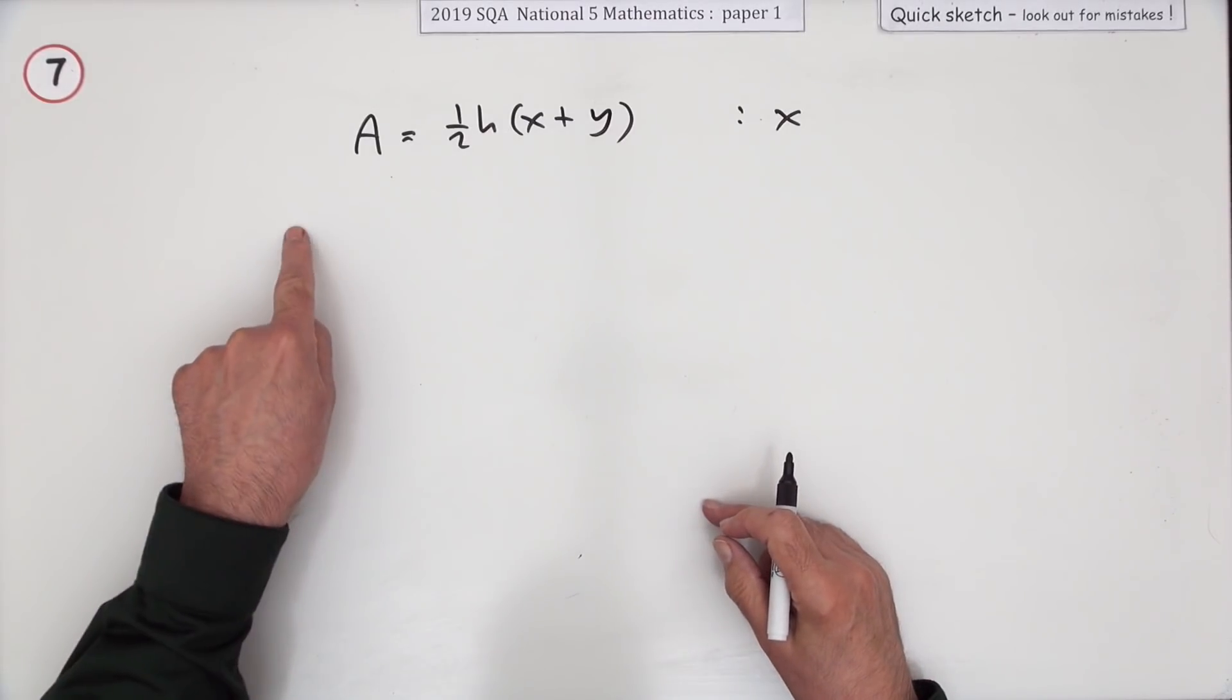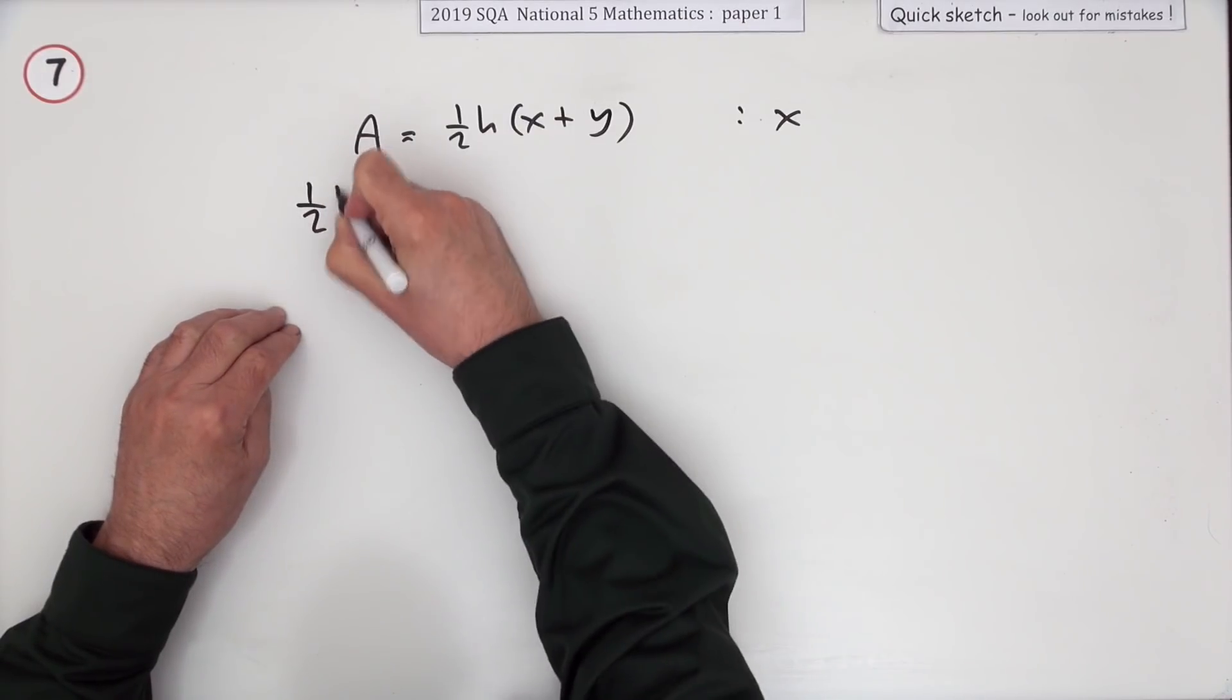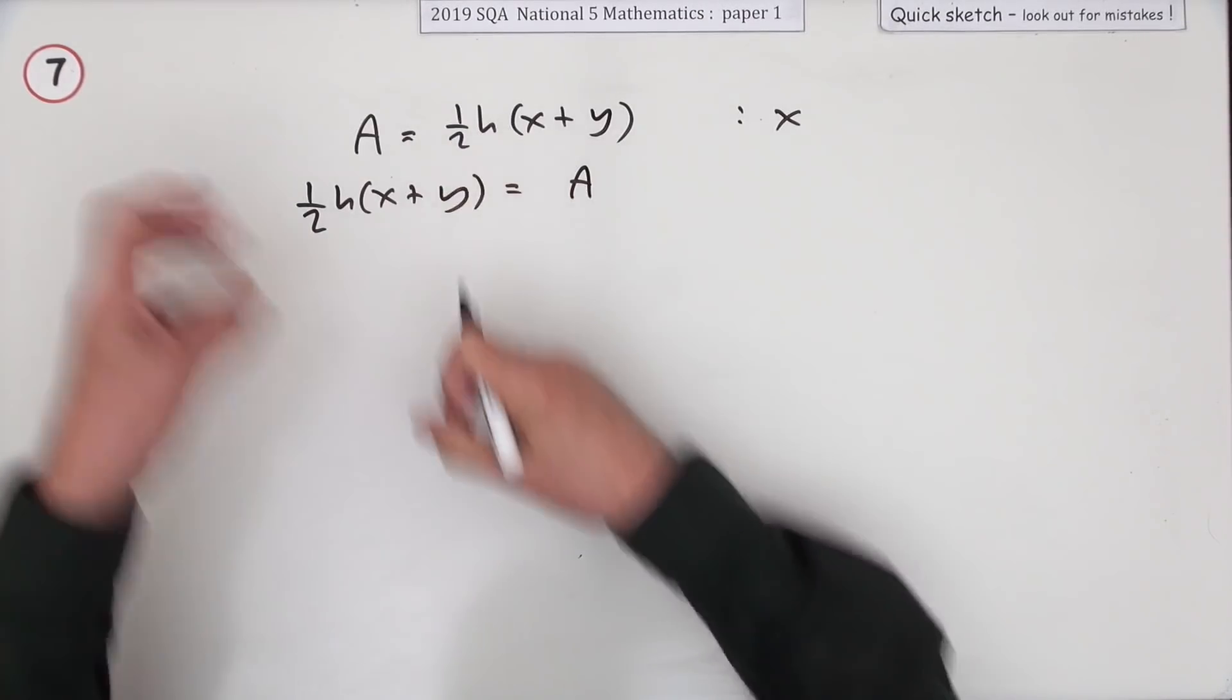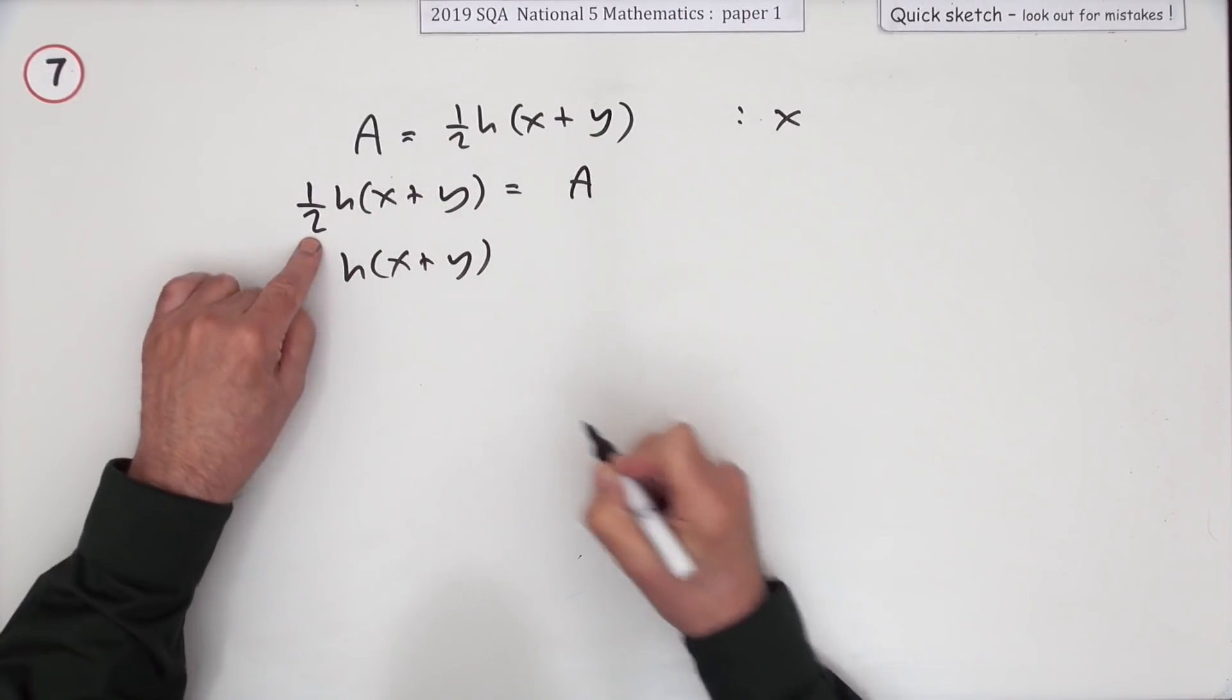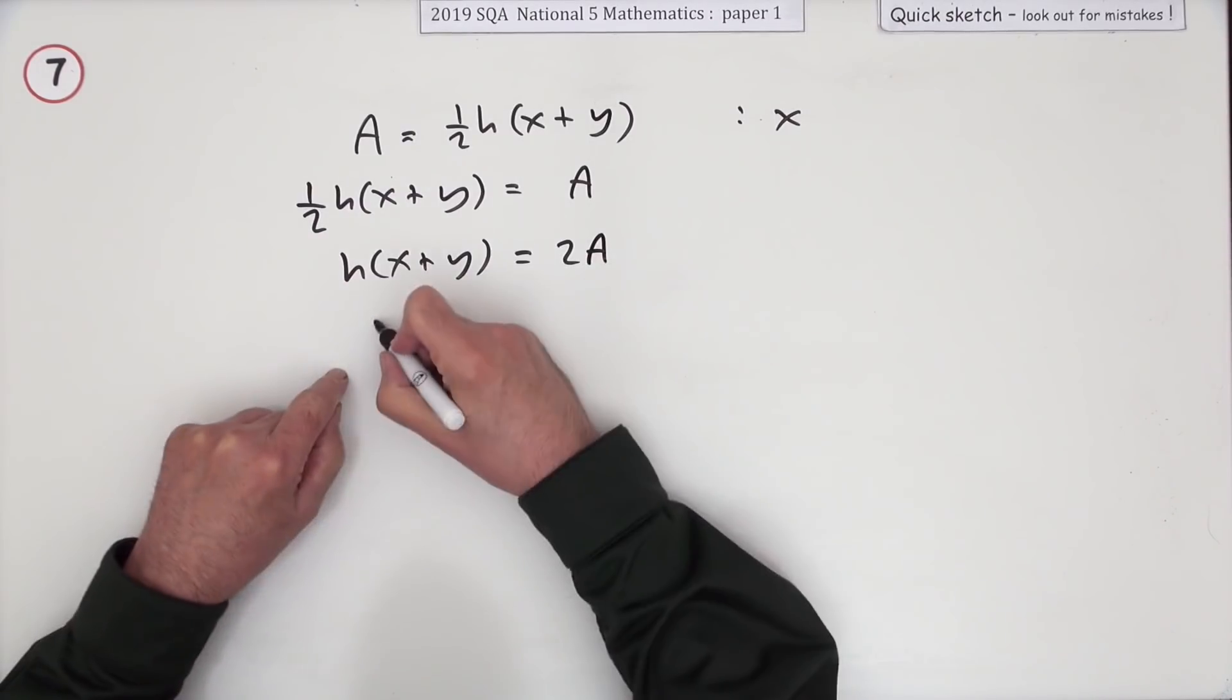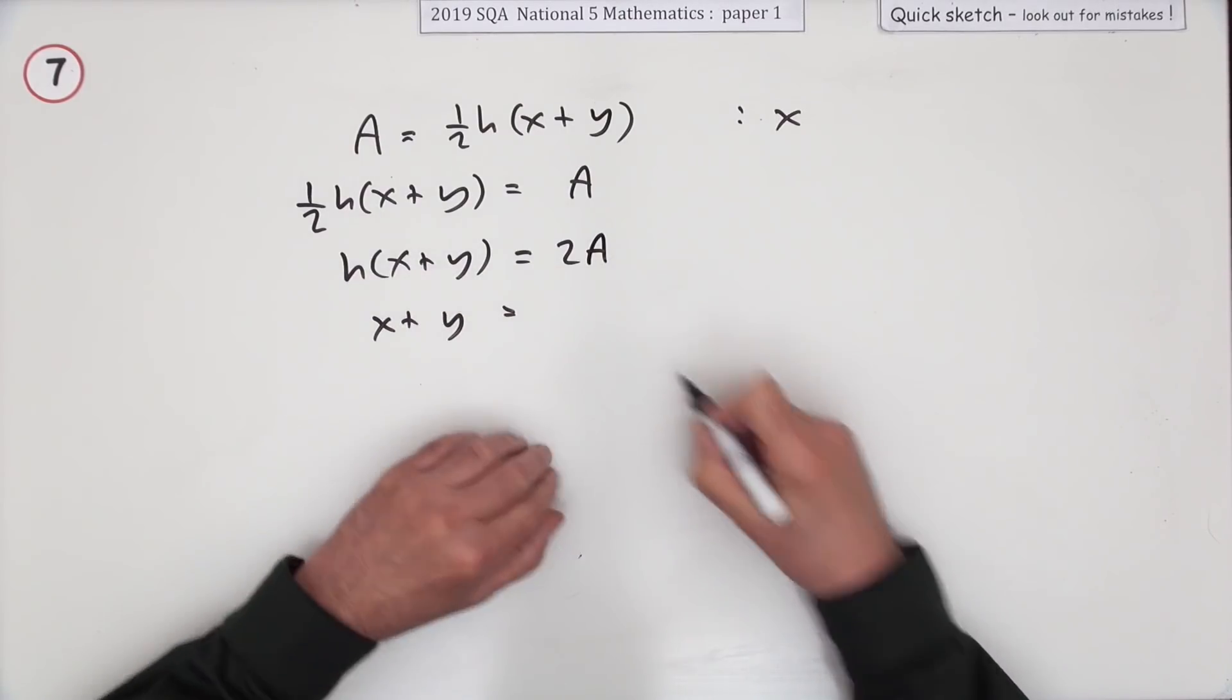Get x on this side on its own and everything else goes away. I'll just reverse it first to get it in the right place. Now you can start peeling off the bits. The first thing that can go is that divide by two, so it can go across as 2A. Now that h can go across and divide.